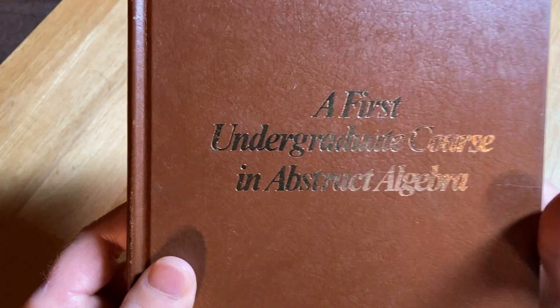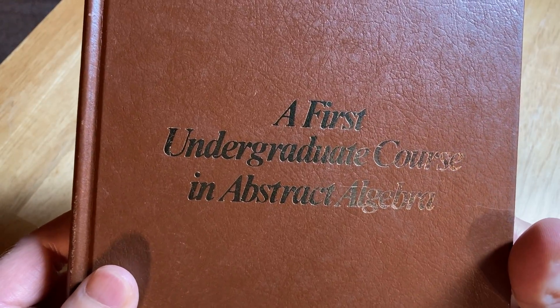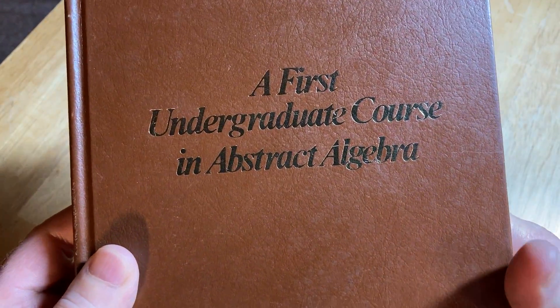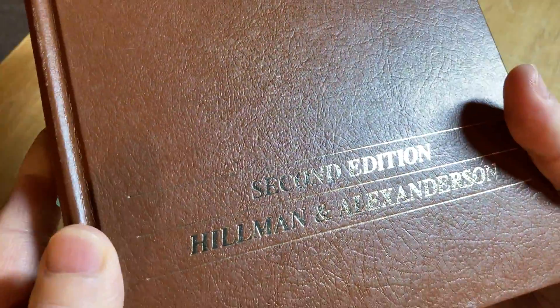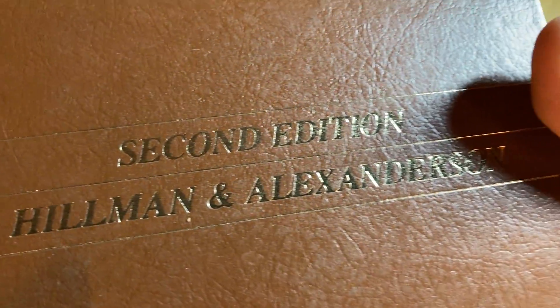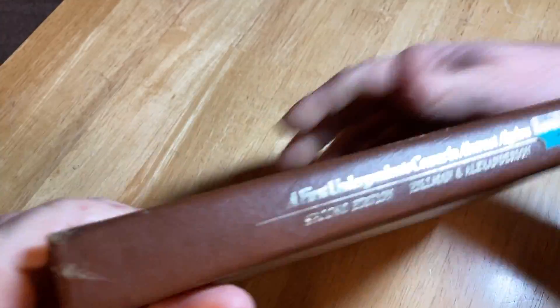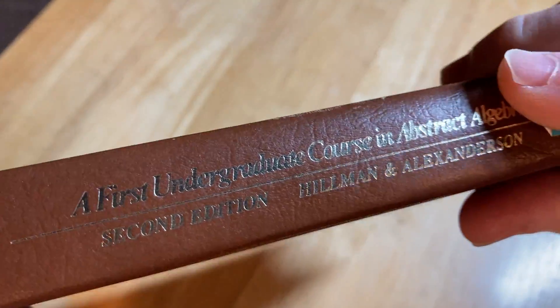This is a math book I have. It's called A First Undergraduate Course in Abstract Algebra. It's the second edition. It's by Hellman and Alexanderson. It's a nice solid cover.